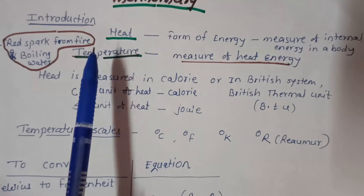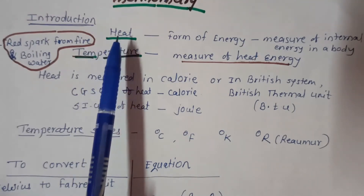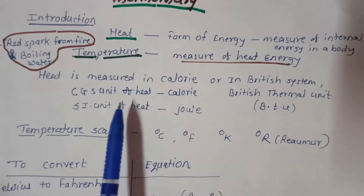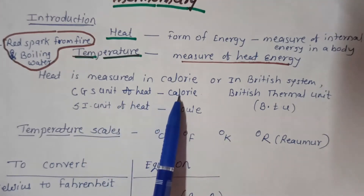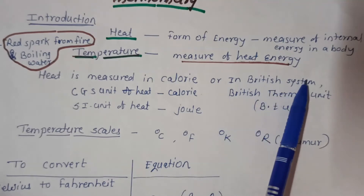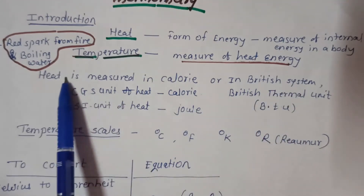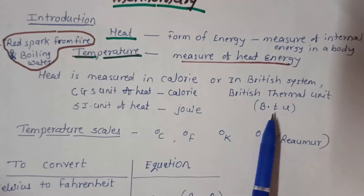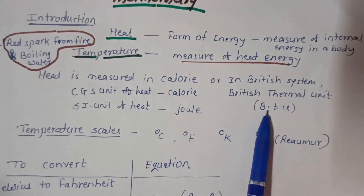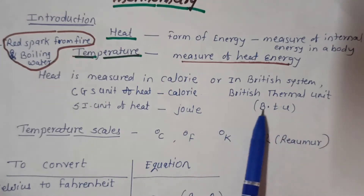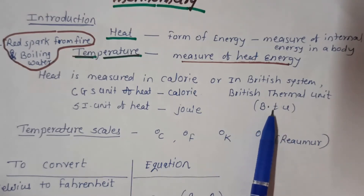The SI unit of heat is the Joule. The CGS unit of heat is the calorie. In the British system, heat is measured in British Thermal Units, that is BTU.